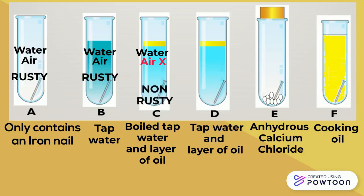What about test tube D? It contains tap water. So even though there is also a layer of oil on top, tap water already contains air from the start. So nail D is exposed to both water and air. So nail D becomes rusty after one month.